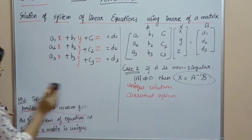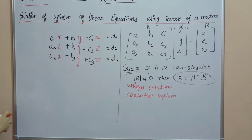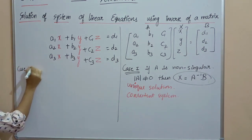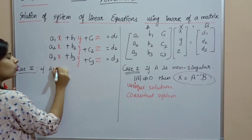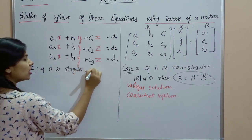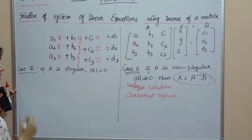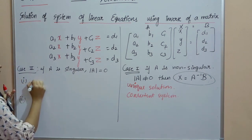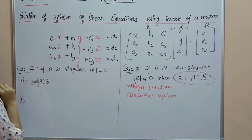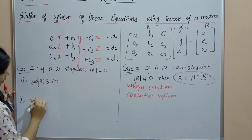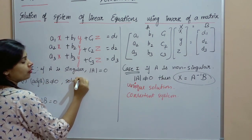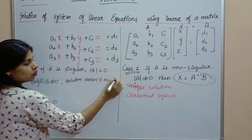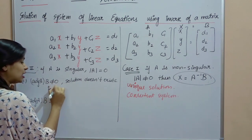Case 2: AX = B hai. Case 2 mein agar A jo hai singular ho jaaye — A singular ka matlab hota hai ki jo determinant hai, A ka woh zero aa jaaye. Agar determinant A ka zero aa jaayega, toh usmein do conditions hongi. Aapko kya nikalna hoga? Adjoint of A into B nikalna hoga. Agar woh not equals to zero aa raha hai — it means that solution of the system of equations doesn't exist. No solution ki baat ho jaayegi. Solution exist nahi karta toh system kya ho jaata hai? Inconsistent system.